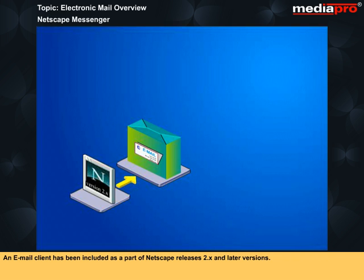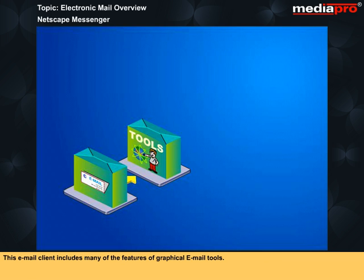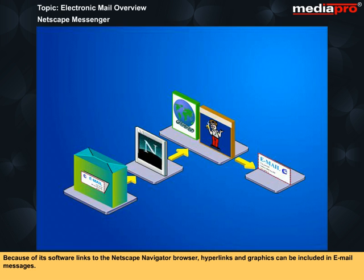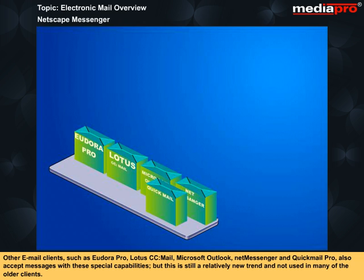An email client has been included as a part of Netscape releases 2.x and later versions. This email client includes many of the features of graphical email tools. Because of its software links to the Netscape Navigator browser, hyperlinks and graphics can be included in email messages. Other email clients, such as Eudora Pro, Lotus CC Mail, Microsoft Outlook, NetMessenger and Quickmail Pro also accept messages with these special capabilities, but this is still a relatively new trend and not used in many of the older clients.